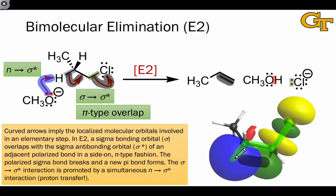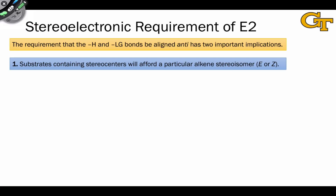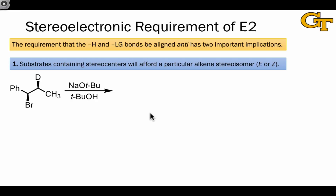The implied dihedral angle is 180 degrees. This requirement that the bonds to the hydrogen and the leaving group be aligned anti has two important implications. The first is that substrates containing stereocenters will yield a particular stereoisomer—either E or Z—depending on the stereochemistry of the starting material. Take this example, in which the two carbons involved in the elimination are both stereocenters.